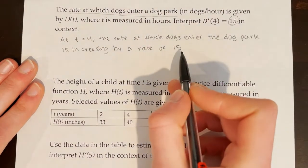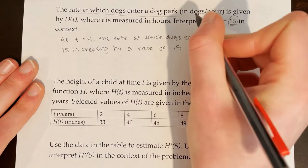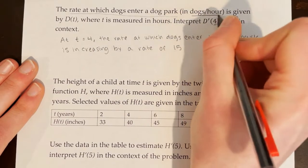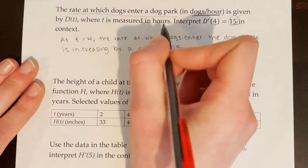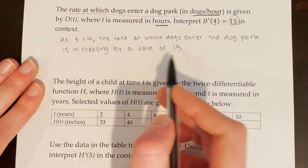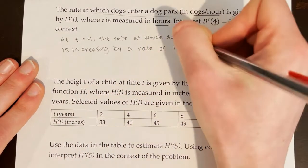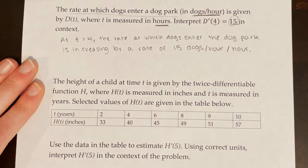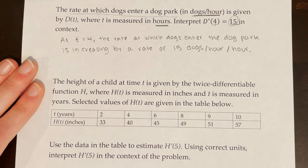Here we have to be careful with the units. We take our units for the dependent variable, which is dogs per hour, and divide by the units for the independent variable, which is hours. So it's increasing at a rate of 15 dogs per hour per hour. Final answer: at t equals 4, the rate at which dogs enter the dog park is increasing at a rate of 15 dogs per hour per hour.